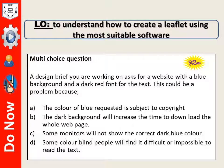A design brief you're working on asks for a website with a blue background and a dark red font for the text. This could be a problem because: A, the colour of blue requested is subject to copyright; B, the dark background will increase the time to download the whole web page; C, some monitors will not show the correct dark blue colour; D, some colour blind people will find it difficult or impossible to read the text. So is it A, B, C or D?